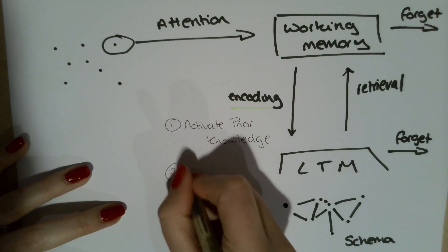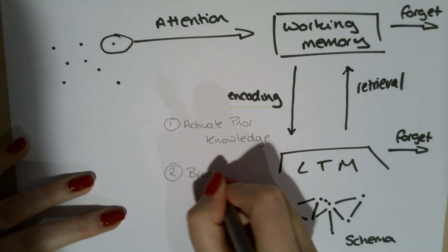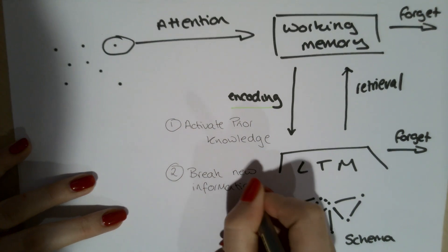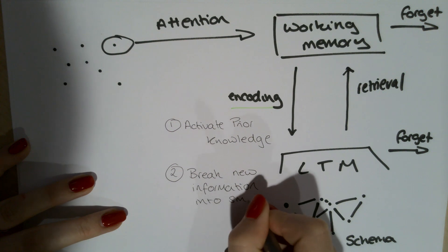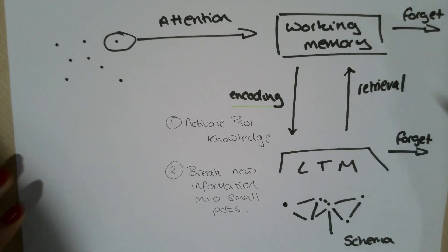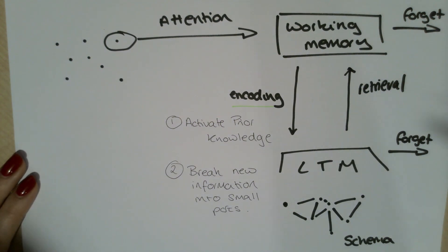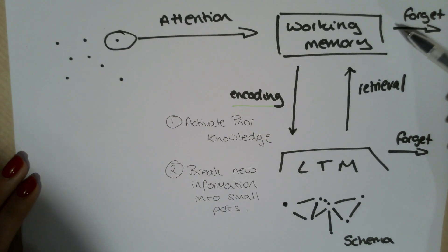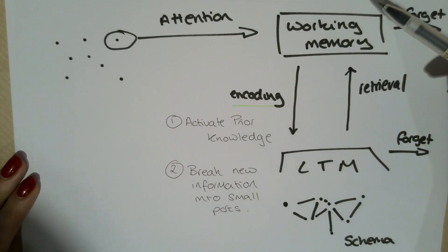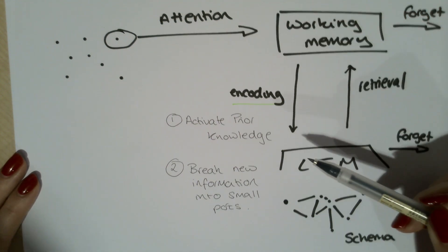The second thing we need to do is break down the new concept into small parts. When we are teaching new information our aim is to get information from our working memory into our long-term memory. If we introduce too much information at once we will overload our working memory and then we are likely to forget. If we can break new information into small parts we protect the space in the working memory, making it more likely that new information will be encoded.